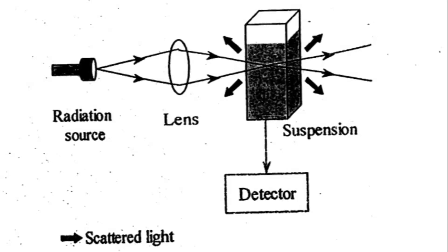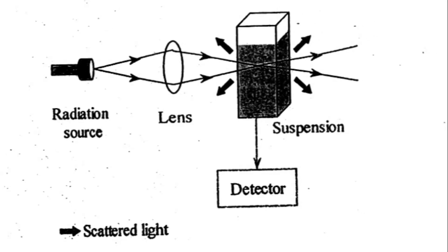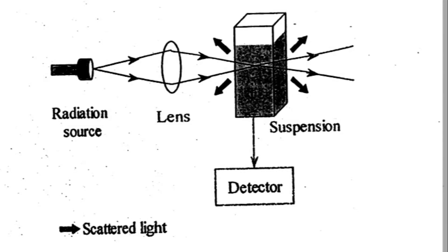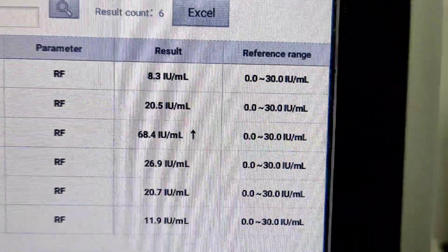Detector then converts intensity of light into electric signal and rheumatoid factor protein is finally quantified, and the results is displayed on screen. So this is how we determine rheumatoid factor in a laboratory.